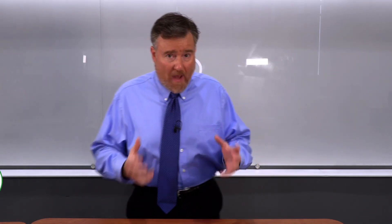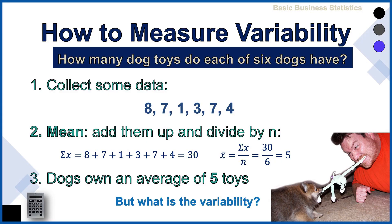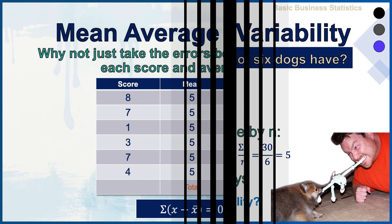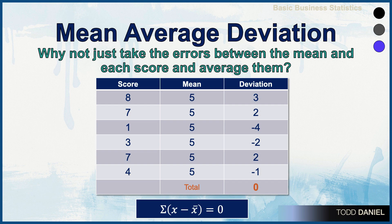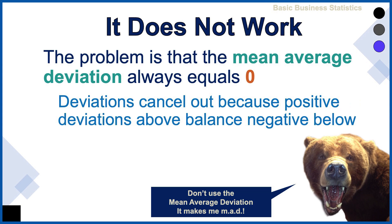We're now ready to learn the correct way to calculate variability in our data set. Last time we collected data from six dogs asking how many toys each dog owned. We added up those scores, divided by n, and found an average of five. Then to calculate the variability, we subtracted five from each raw score and added up those deviation scores so we could divide by n. However, when we did that, we discovered a problem: the mean average deviation always equals zero.